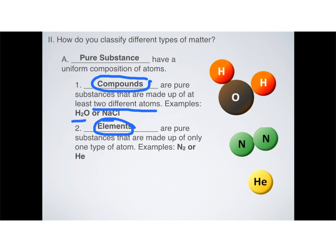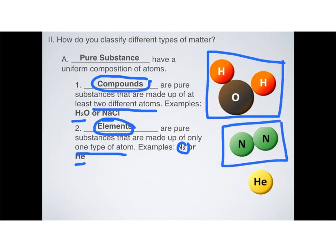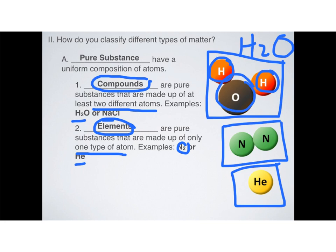Elements, on the other hand, are pure substances that are made up of only one type of atom — for example, nitrogen gas (N2) and helium. What makes all of these things uniformly composited is that there's a set formula to how they appear in nature. For example, water is always H2O, which means it always contains two hydrogens and one oxygen. That never changes — its composition is uniform. That's an example of a compound.